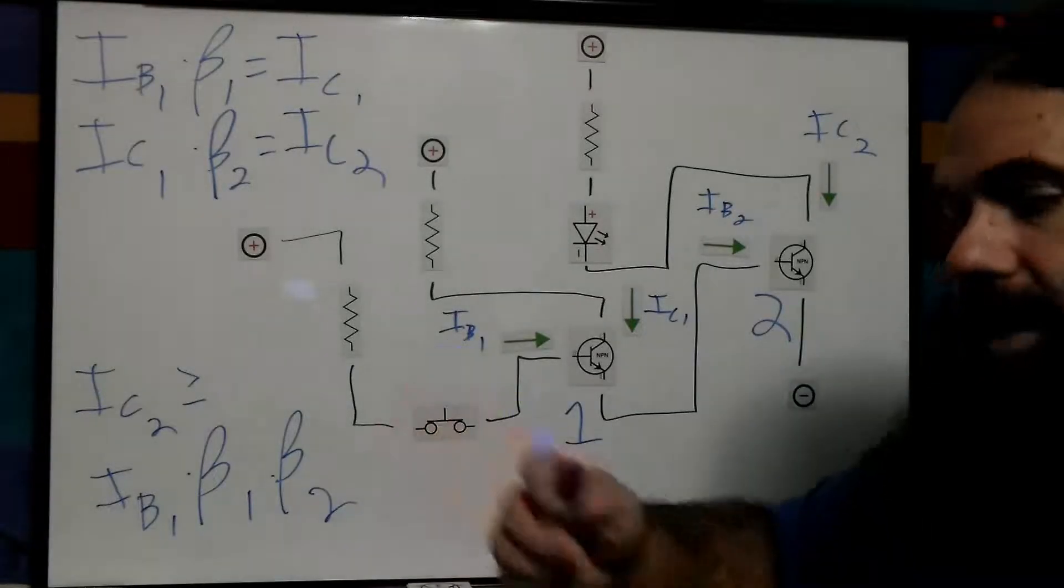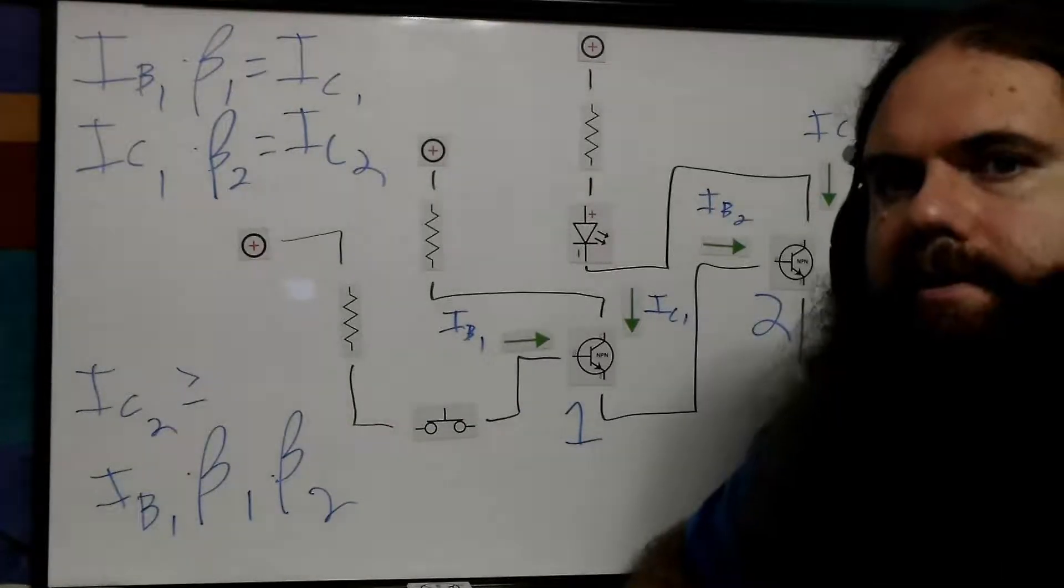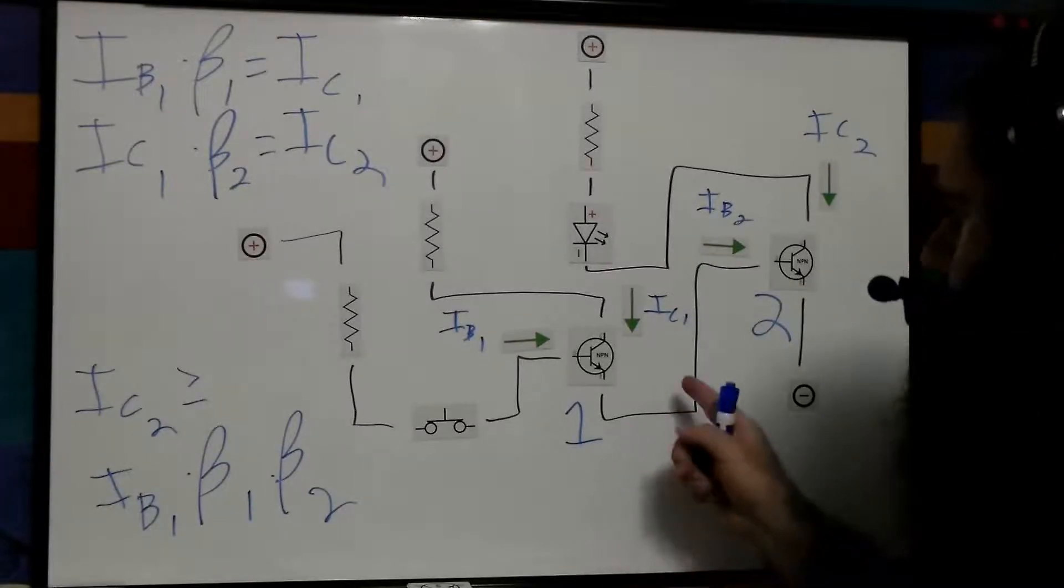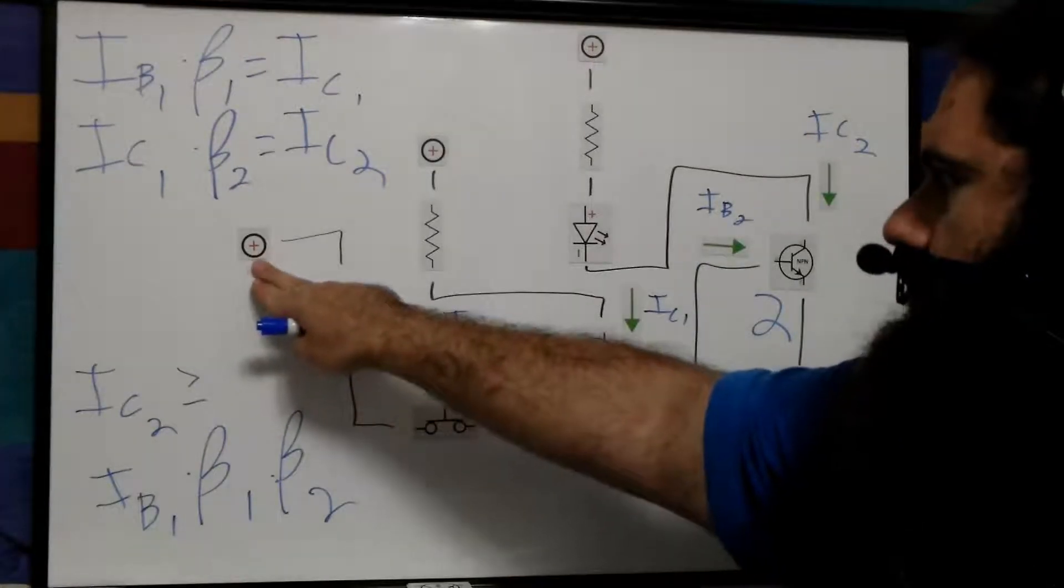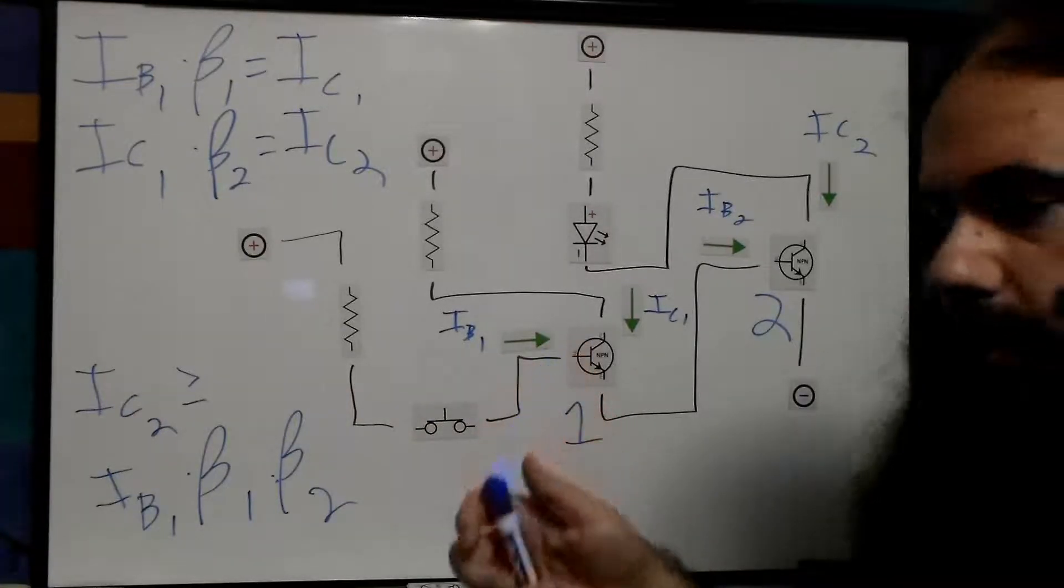So if beta is 100, that's 10,000. So we are amplifying the current in two stages. That's how it works. You're just amplifying current.